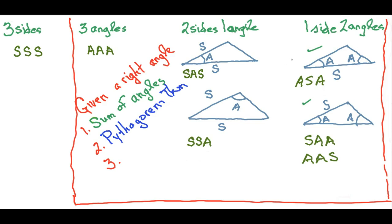The Pythagorean theorem applies to right triangles, so if we're ever given two sides and we know that one angle is a right angle, we'd be able to solve for the third side. Trigonometric ratios are also defined on right triangles, so if we know we've got a right angle, we could use SOH-CAH-TOA — sines, cosines, and tangents and their inverses — to find missing parts.